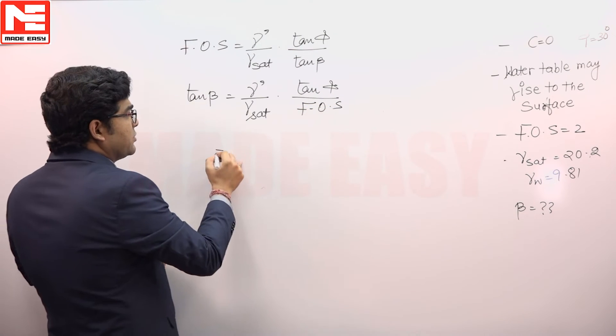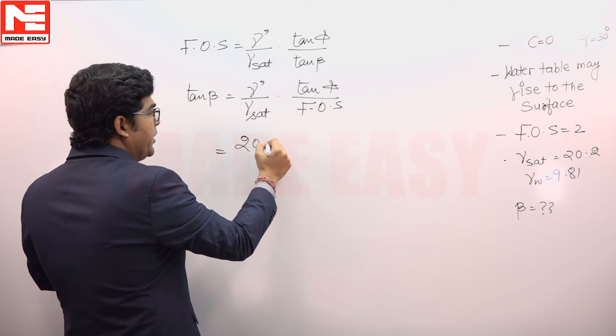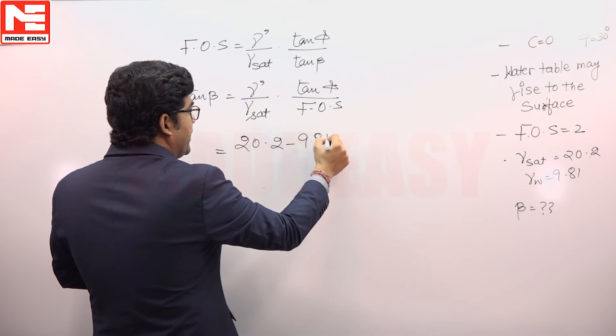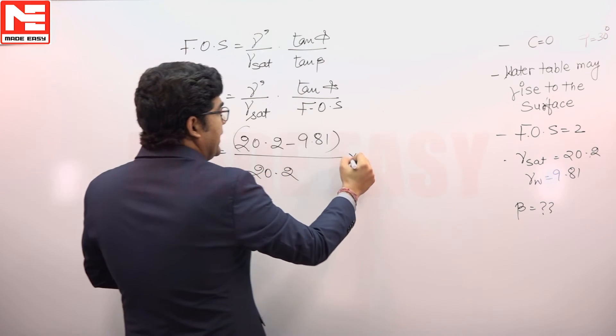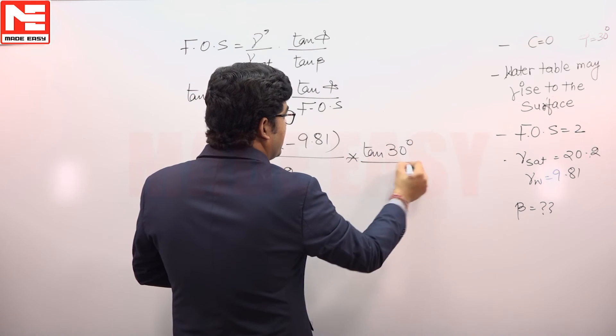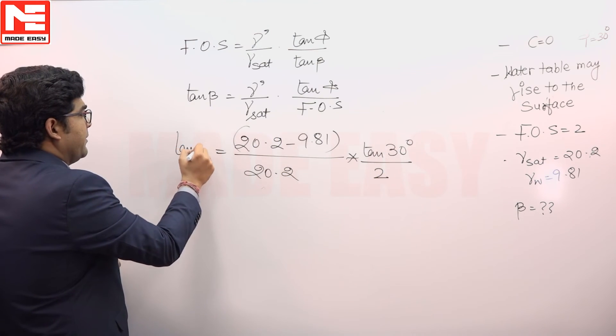Gamma saturated is given, so gamma submerged will be gamma saturated minus gamma w. It means 20.2 minus 9.81 divided by gamma saturated, that is 20.2, tan phi. Phi is given as 30 degrees, divided by factor of safety which is also given as 2, and that will be equivalent to tan beta.